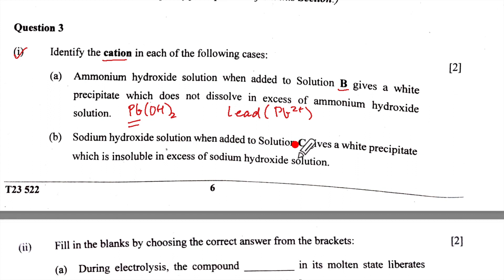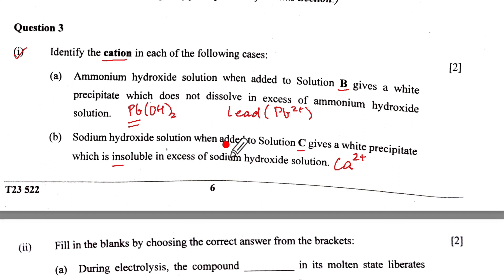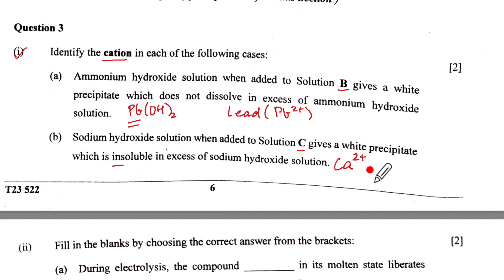Sodium hydroxide is added to solution C and gives a white precipitate which is insoluble in excess of sodium hydroxide. A white precipitate insoluble in excess NaOH is Ca²⁺ — it gives a milky white precipitate. It could also be Mg²⁺, which gives a dull white precipitate. Zinc, lead, and aluminium give precipitates soluble in excess NaOH. So you can write Ca²⁺ or Mg²⁺ as the answer.